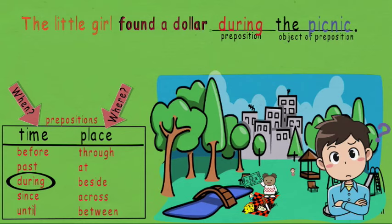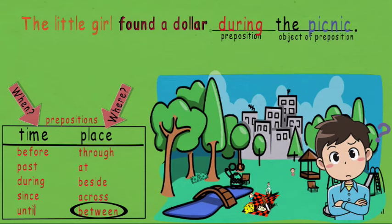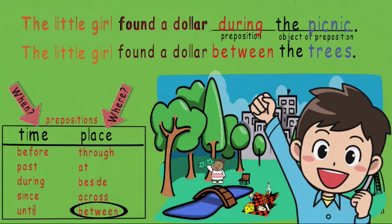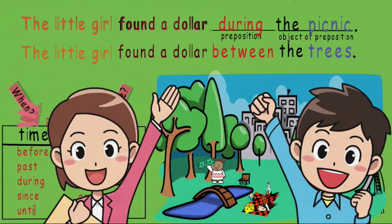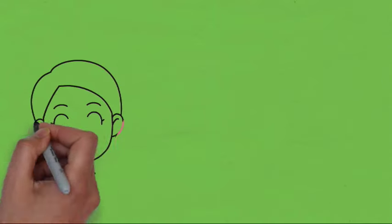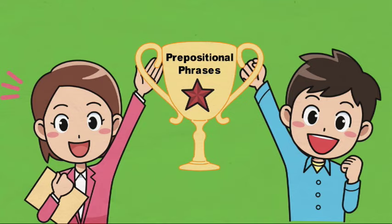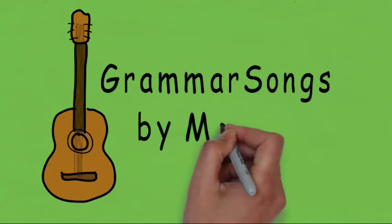Where did she find it? Little girl, where did you find the dollar? I found the dollar between the trees. So: the little girl, subject, found a dollar between the trees, prepositional phrase. This is awesome! Congratulations! You are champions of prepositional phrases. Thank you for joining me at Grammar Songs by Melissa.